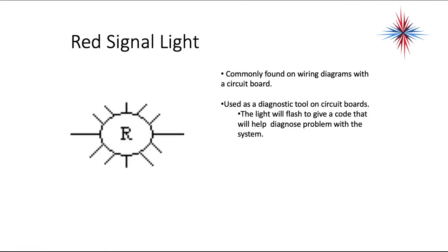A red signal light is commonly found on wiring diagrams with a circuit board. It's used as a diagnostic tool on many circuit boards. The light will flash, giving a code that will help diagnose the problem in the system. The signal light schematic symbol is this little circle with an R in the middle of it, or whatever color the light actually is.